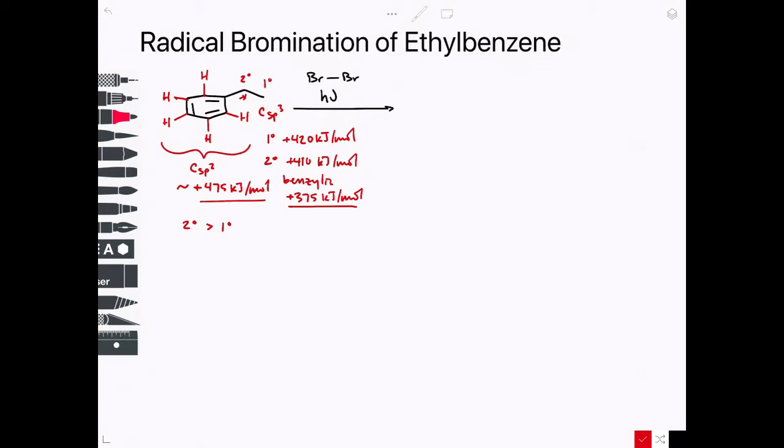So we can actually form, by first glance here, two different products. So let's draw those out. We're going to substitute off the secondary position first. So we're substituting a CH here. That's going to be our major. And then our minor is going to be derived from the primary.